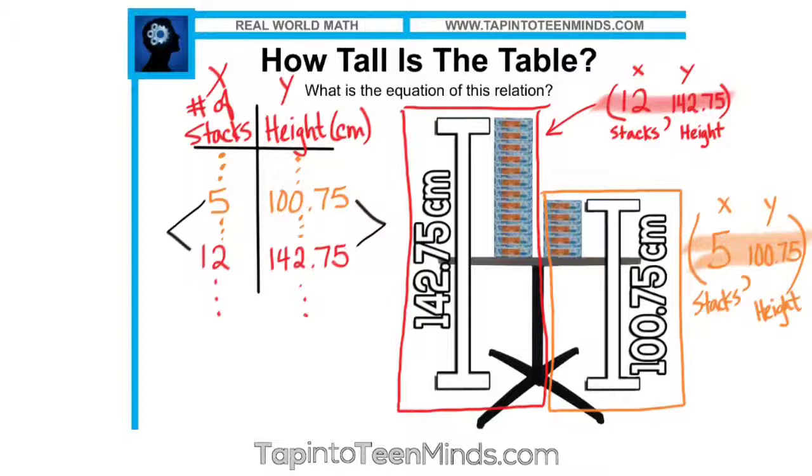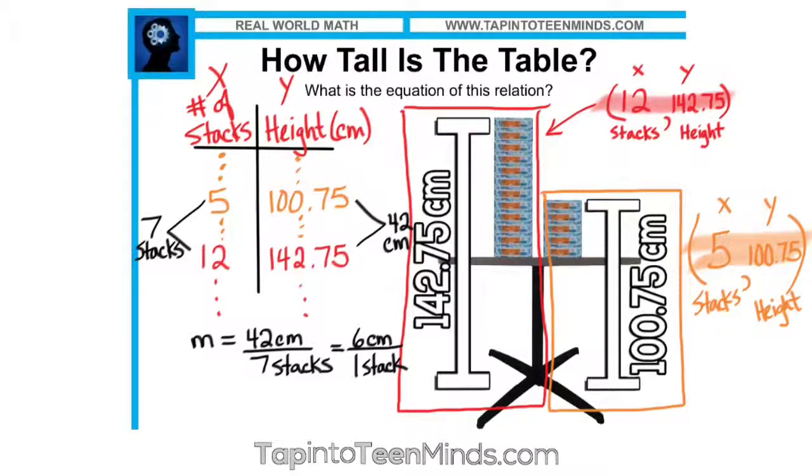So in this case, by subtracting our two heights, as we did in the first problem, we end up with 42 centimeters, and we end up with seven stacks, which ultimately give us the same rate of change. So since we have the slope, we could then follow through using the same method we did on the previous slide, where students would find the height of seven stacks, or the height of five stacks individually, and then subtract to find the table height.